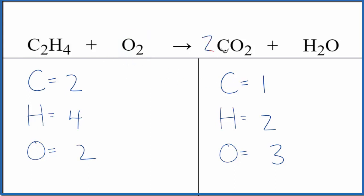Let's put a two in front of the CO2. One times two. That's balanced. We do need to update our oxygens. Two times two is four. Plus we have the one here with the water. So that gives us five.